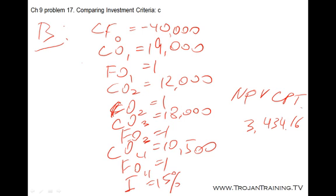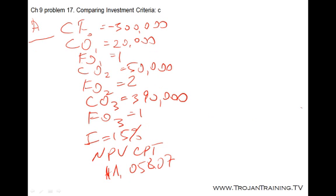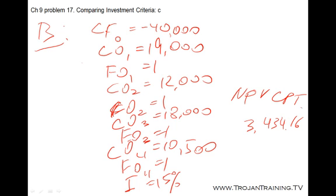Comparing these two net present values for Project A and Project B, we can see that Project A has a higher NPV. So we should accept Project A in this case because it has a higher net present value compared to Project B.